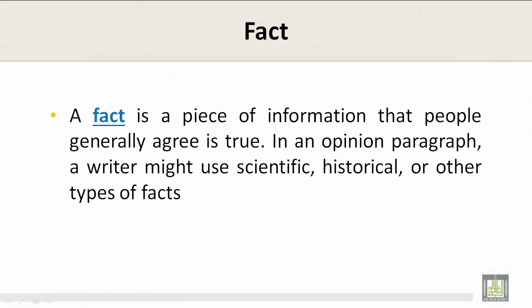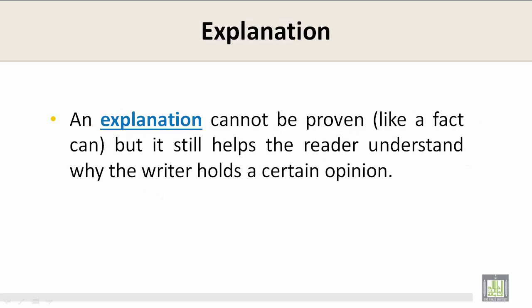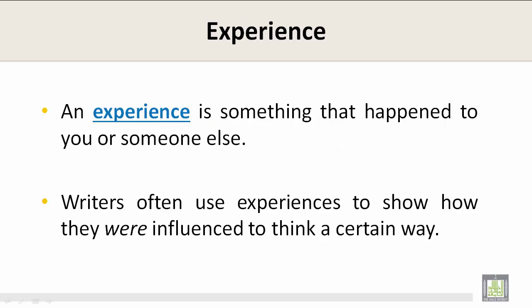A fact is a piece of information that people generally agree is true. In an opinion paragraph, a writer might use scientific, historical, or other types of facts. An explanation cannot be proven like a fact can, but it still helps the reader understand why the writer holds a certain opinion. An experience is something that happened to you or someone else. Writers often use experiences to show how they were influenced to think a certain way.